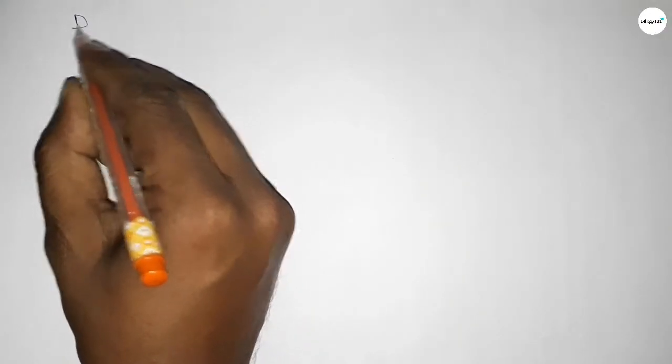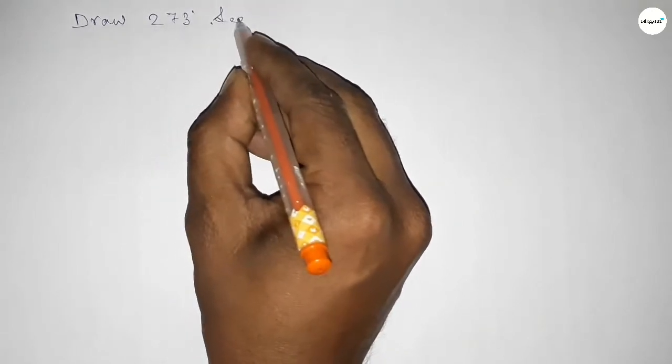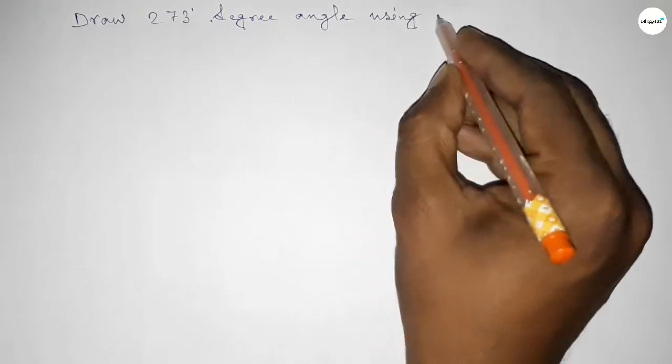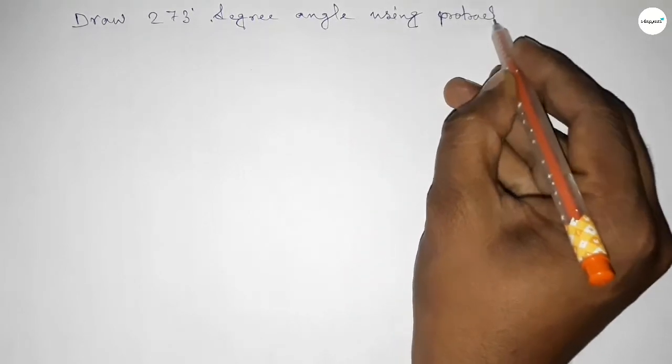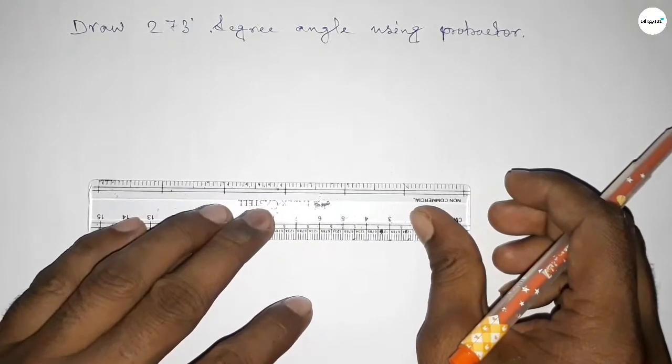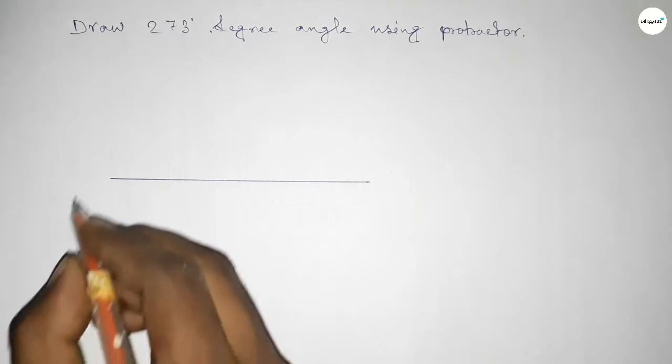Hi everyone, welcome to SSR Classes. Today in this video we have to draw a 273 degree angle by using a protractor. So let's start the video. First of all, we have to draw here a straight line of any length.